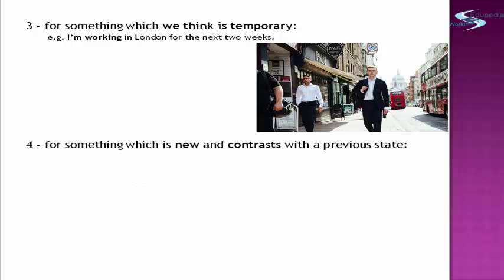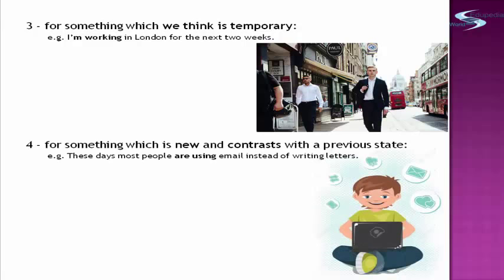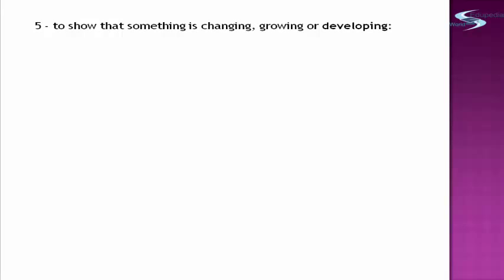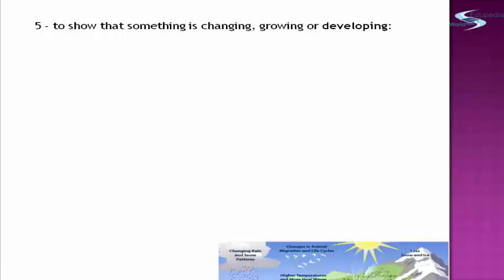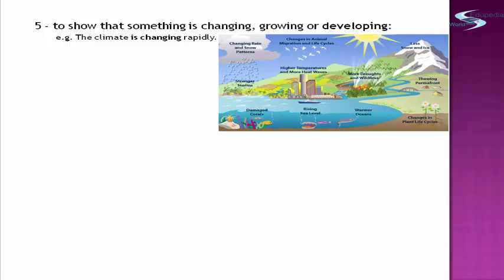The fourth usage: it is used for something which is new and contrasts with a previous state. Example: 'These days, most people are using email instead of writing letters.' In the olden times, we wrote letters, but nowadays we click our computers. The fifth usage is that it is used to show that something is changing, growing, or developing. Example: 'The climate is changing.' It is really changing, growing, or developing.